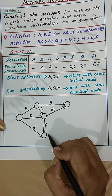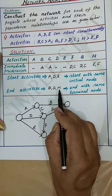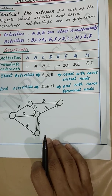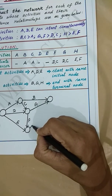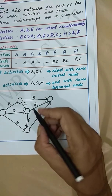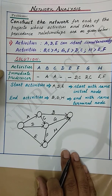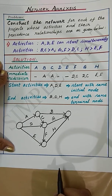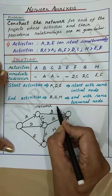Finally, we have activity H, which occurs after E and F, and it is also an end activity. Hence activity H should end where B and G end. This is activity H. So now we have completed drawing the network diagram.